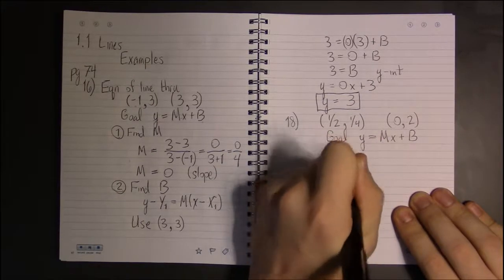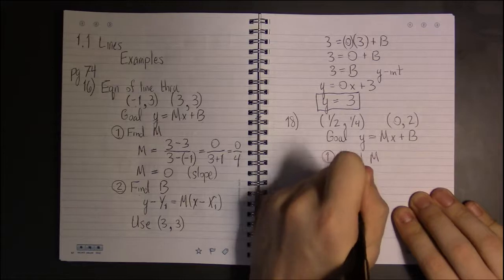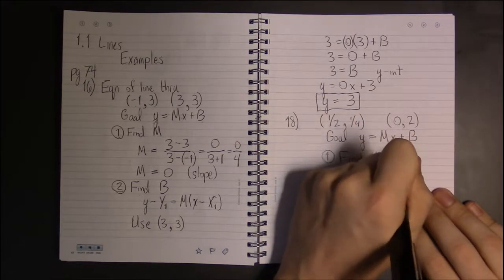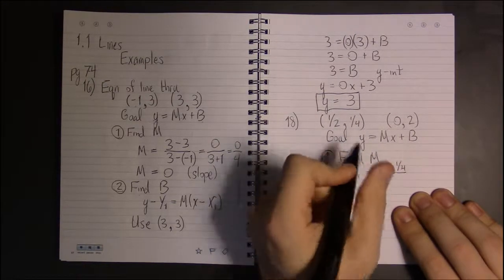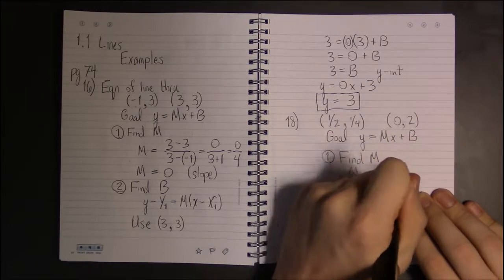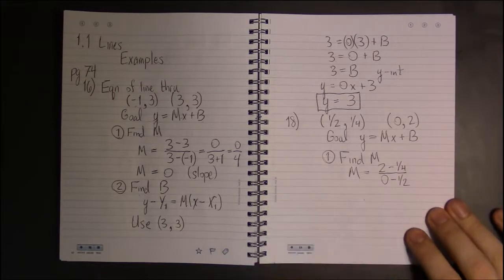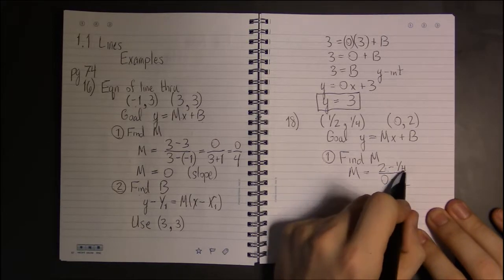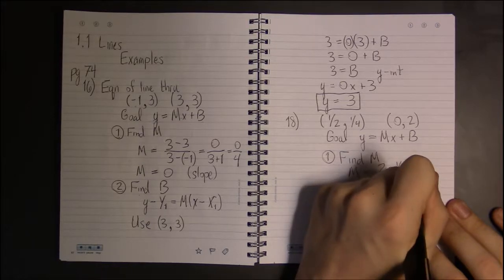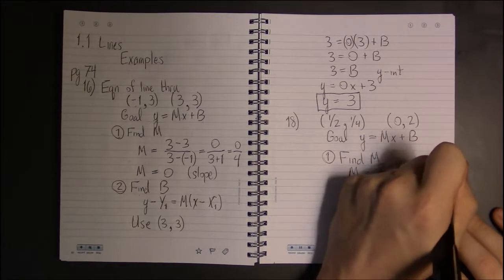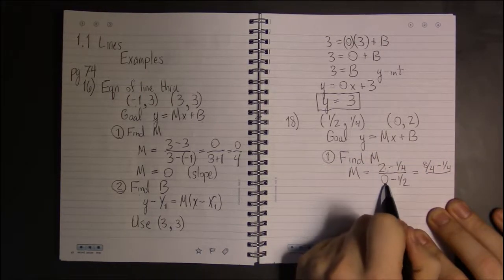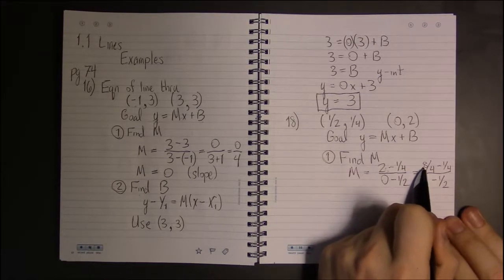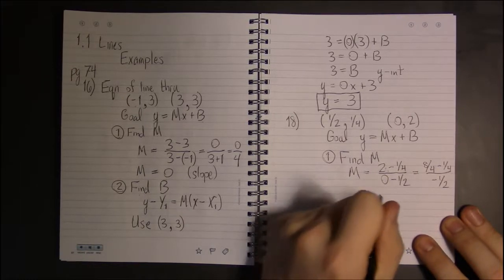So we start off by finding M. So we take the change in Y: 2 minus 1/4 divided by the change in X: 0 minus 1/2. Now let's see, this is going to be 2 over 1, so the common denominator is going to be 4. 2 over 1 is the same thing as 8 over 4. And 0 minus 1/2 is just going to be -1/2. So 8/4 minus 1/4 is 7/4